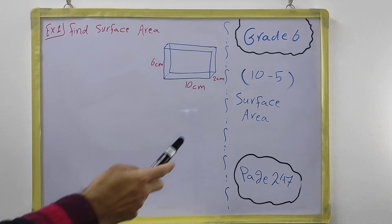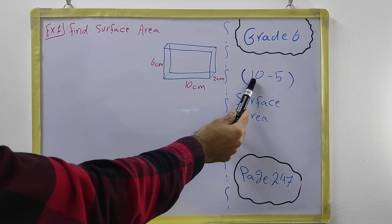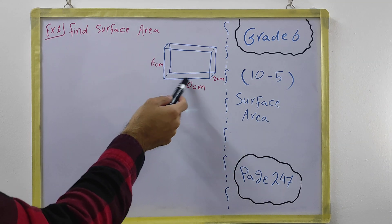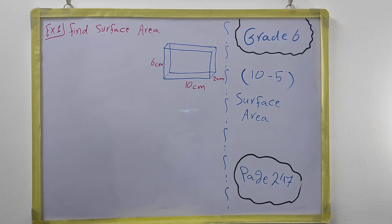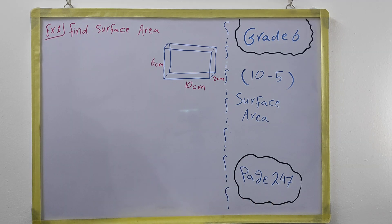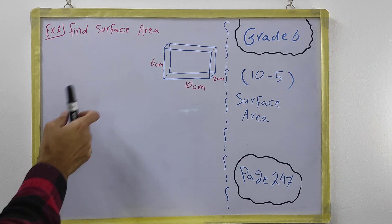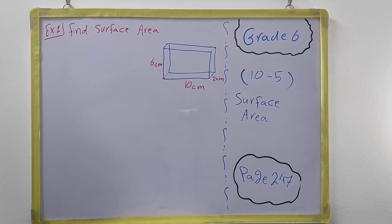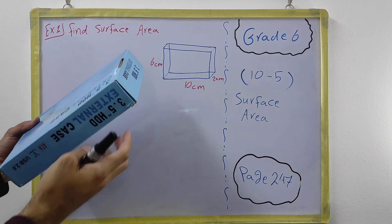Hi everyone. In this video for grade 6 we have unit 10.5, which is about surface area of 3D shapes. Here we have a rectangular prism shape on page 247. By surface area we mean the area — the measurement of all the faces. For example, the rectangular prism is a shape like a box.